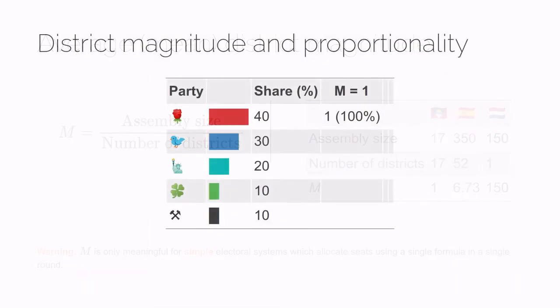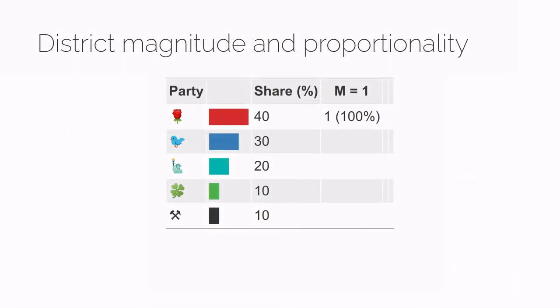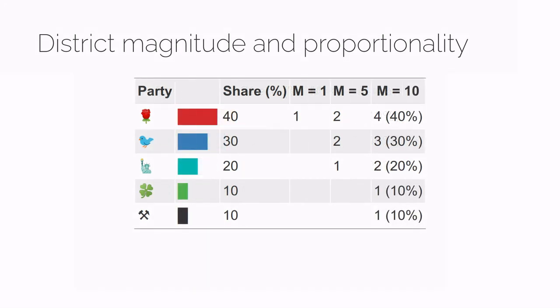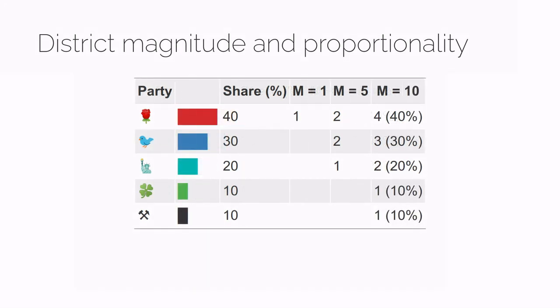Imagine that you have five parties that win 40, 30, 20, 10, and 10% of the vote. If you have a district with magnitude 1, then it's very hard to divide that single seat proportionally — the party that polls 40% gets the one seat available, going from 40% of the vote to 100% of the seats. If instead you have a district magnitude of 5, it's easier to divide proportionally: you might give two seats to the largest two parties, one seat to the third party, and zero seats to the remaining parties. And of course, if you have a district magnitude of 10, you can divide the seats exactly proportionally, so that no party has an unfair advantage.